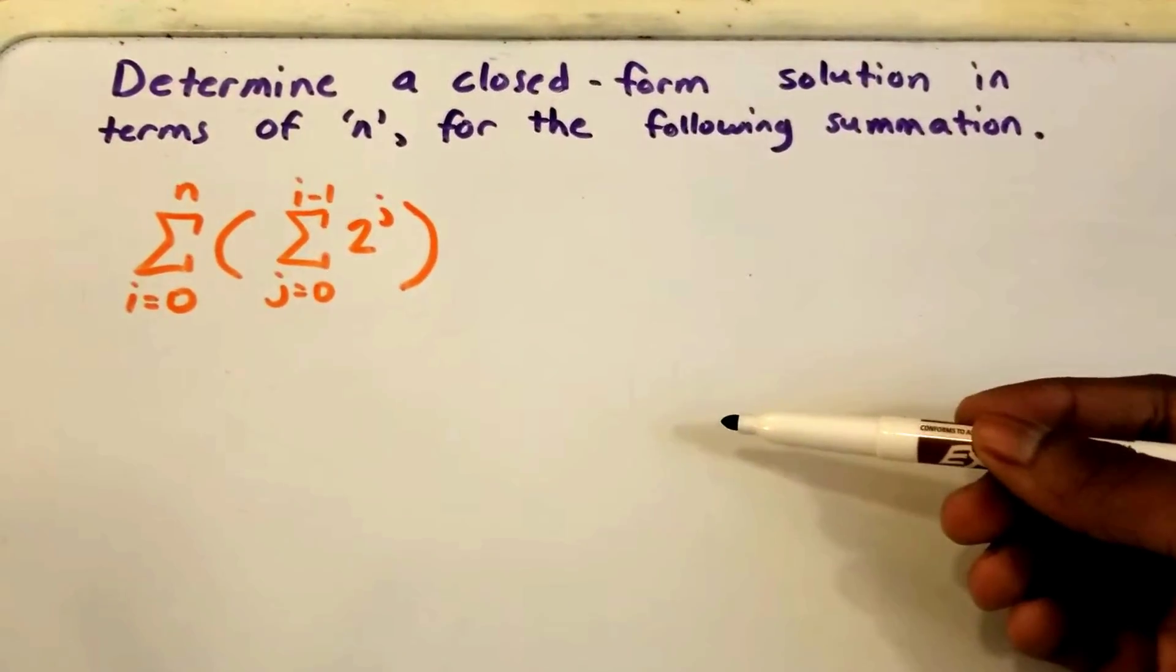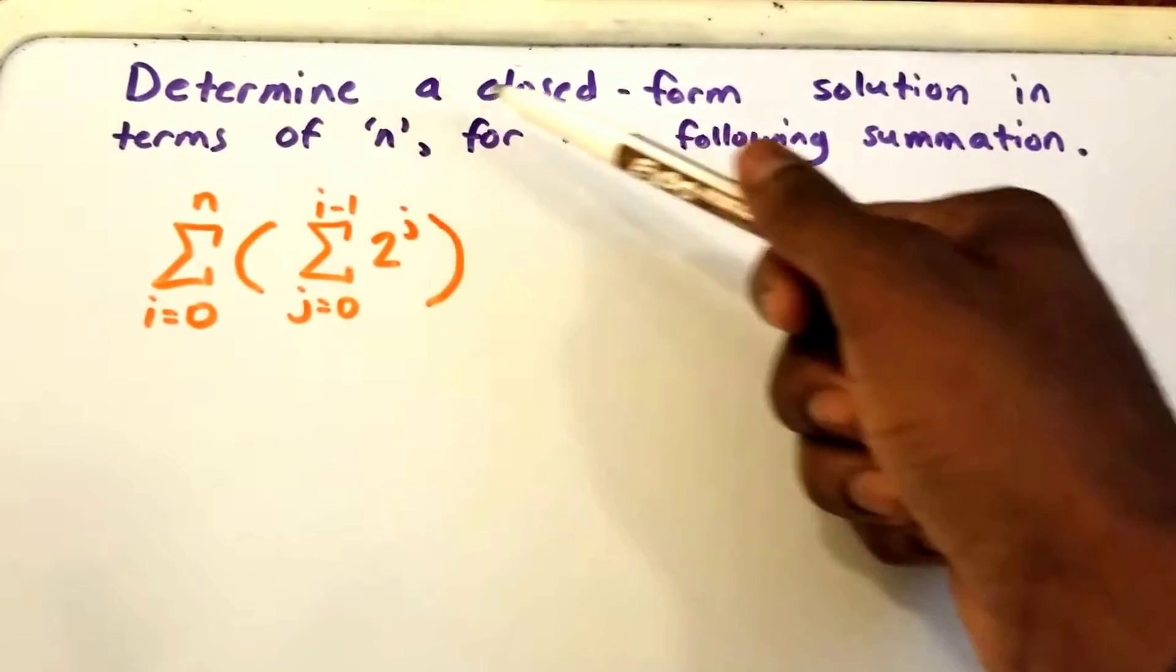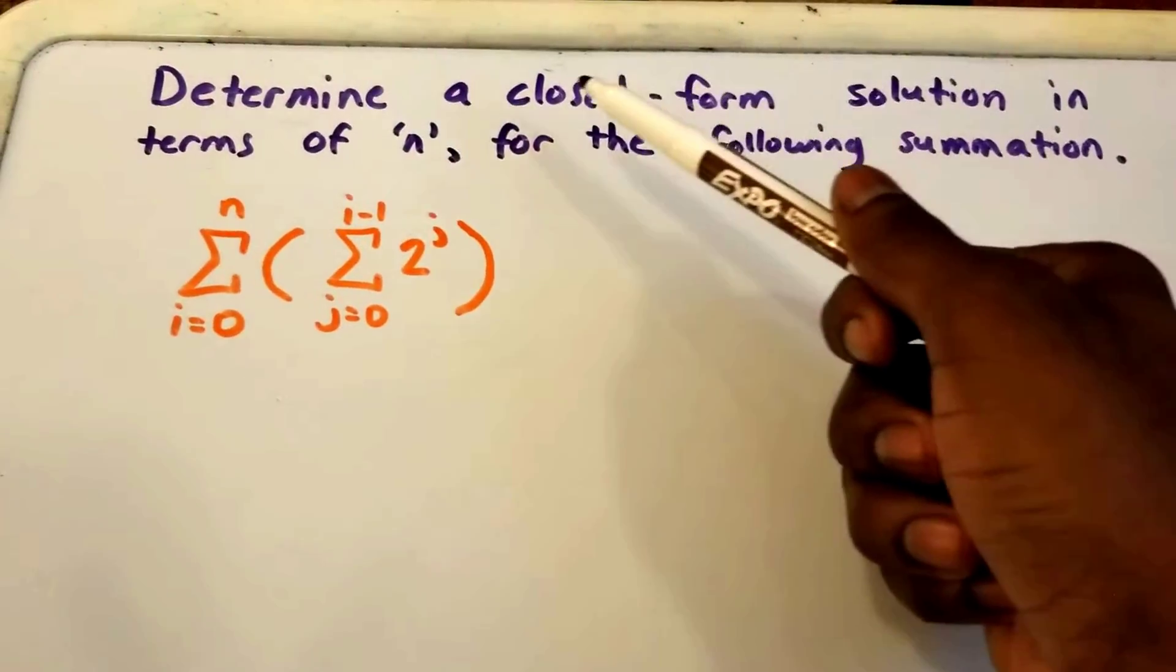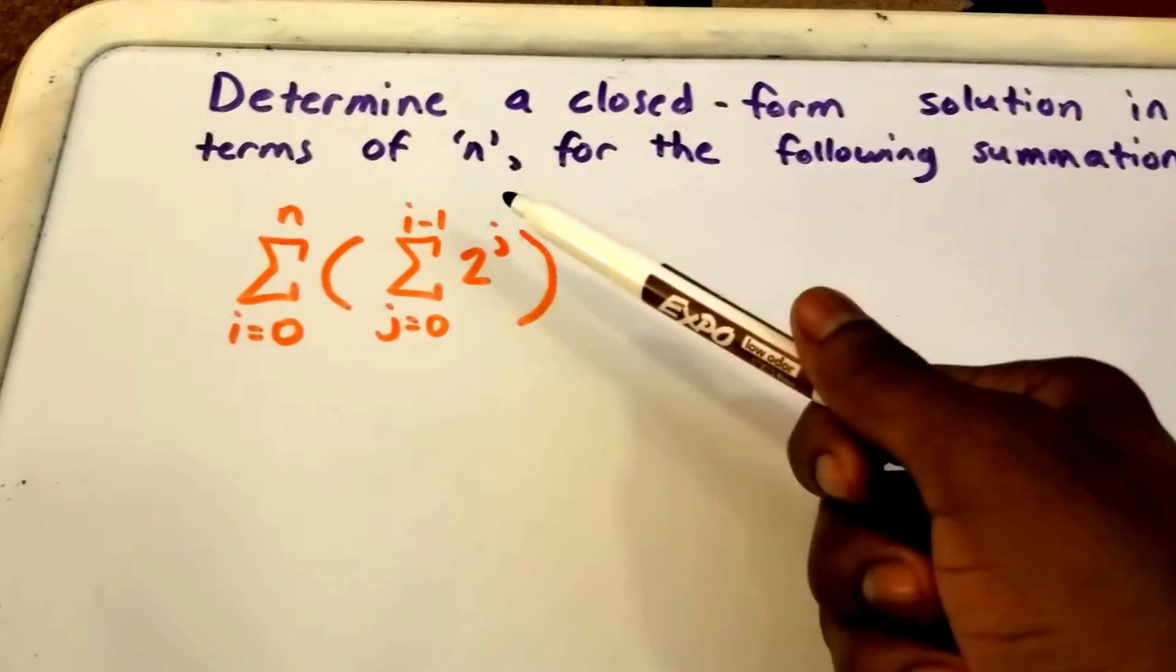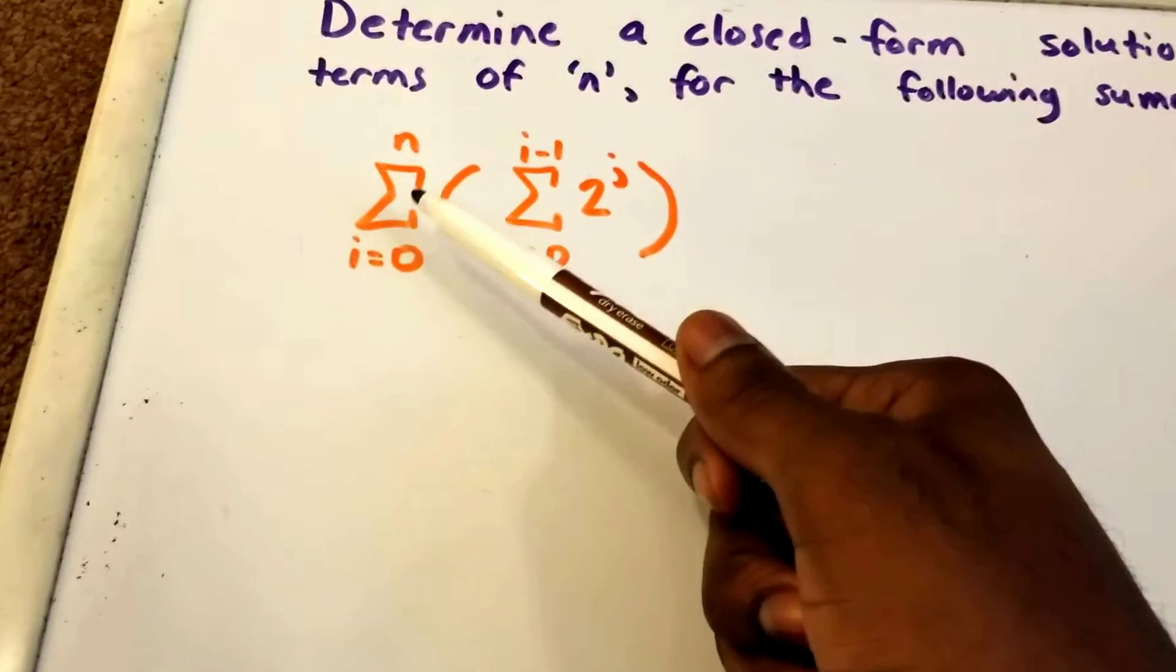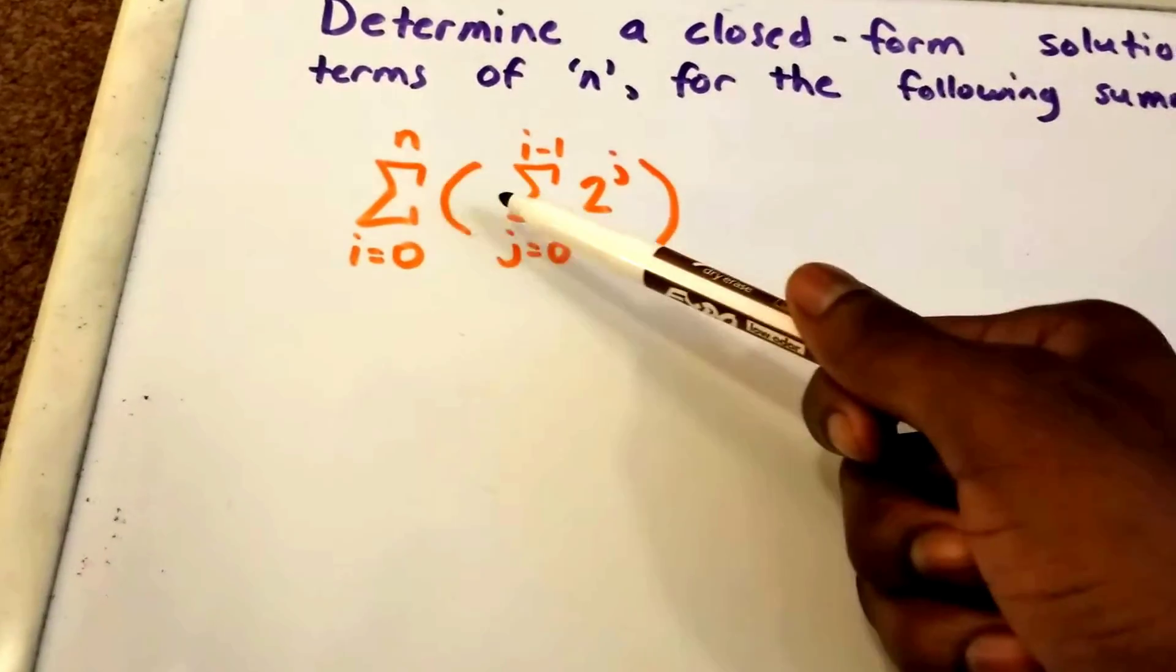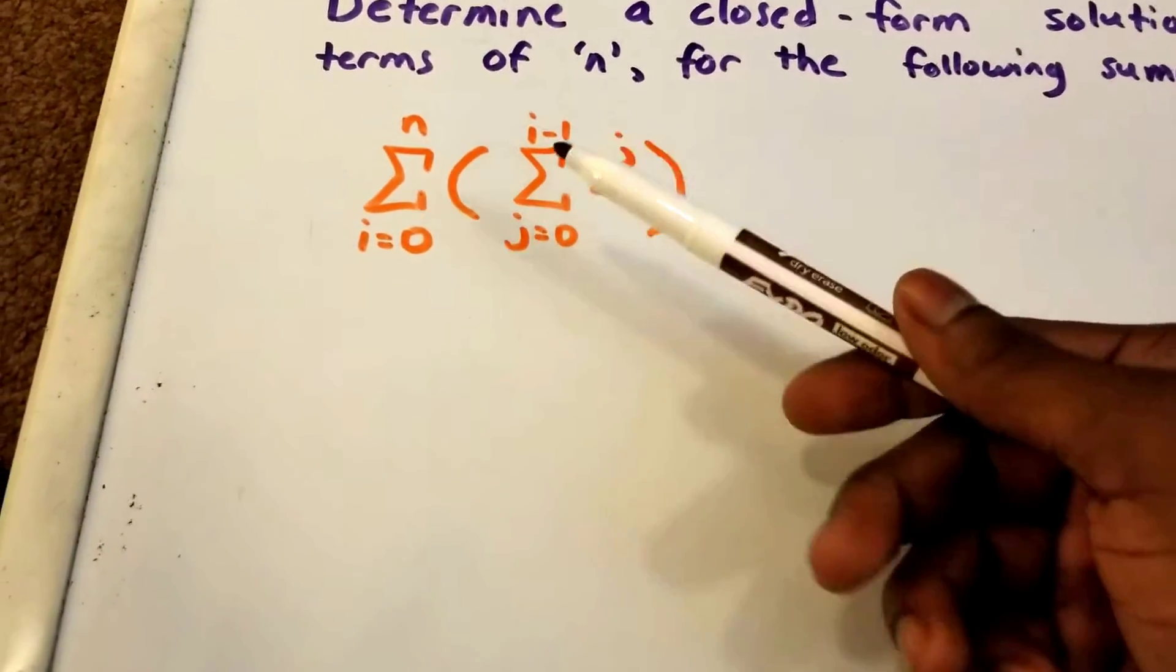Hey guys and welcome to this video on summations. In purple, I have the problem: determine a closed-form solution in terms of n for the following summation. I have that summation in orange here, starting from i equals 0 to n of the summation from j equals 0 to i minus 1 of 2 to the power of j.